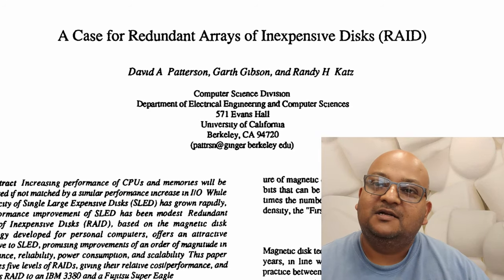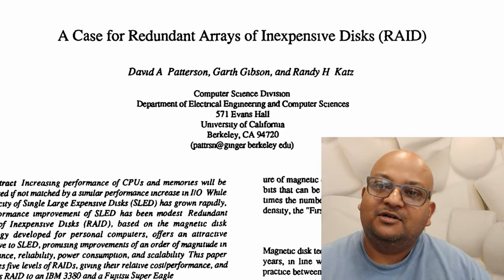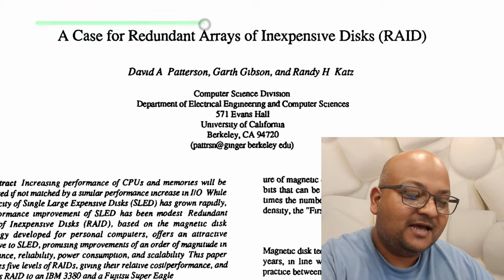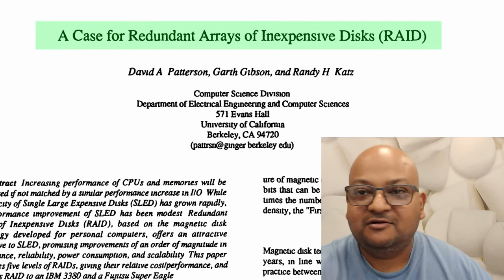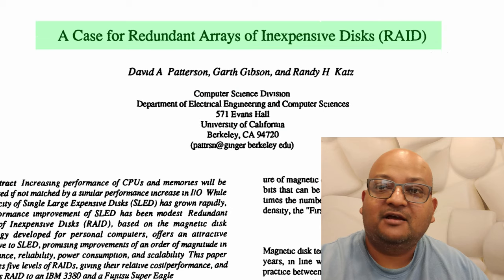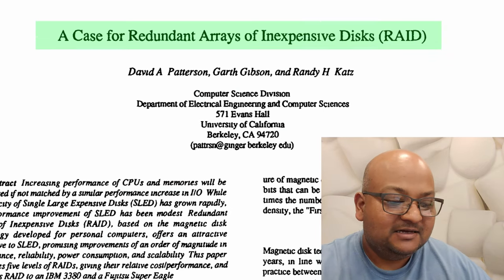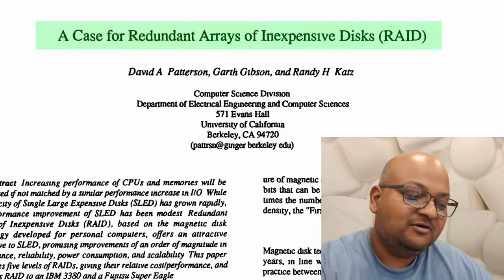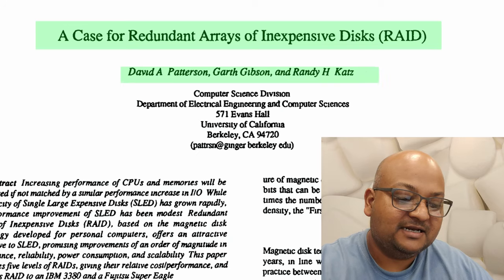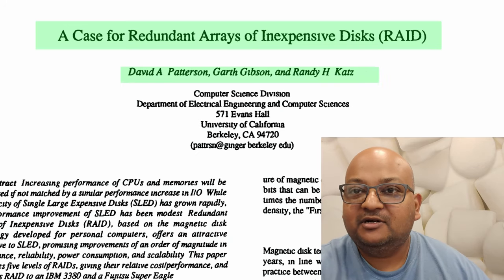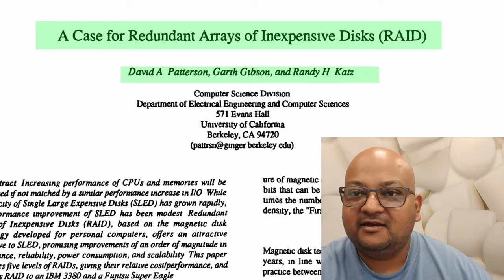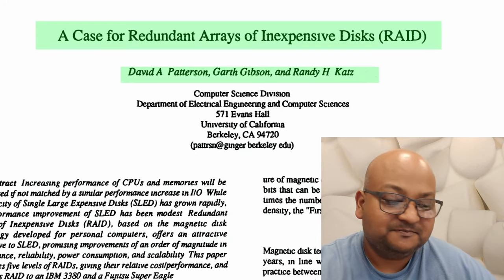Hi folks, welcome back. Today I want to look at the paper that makes the case for RAID, or a redundant array of inexpensive disks. This paper was written by Patterson, Gibson, and Katz from UC Berkeley and published in the 1988 ACM SIGMOD conference.